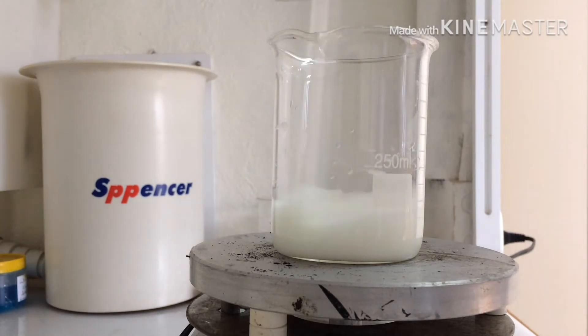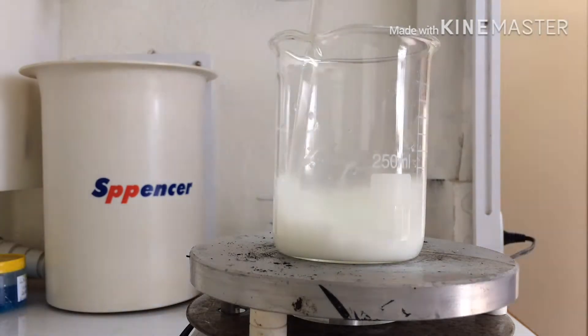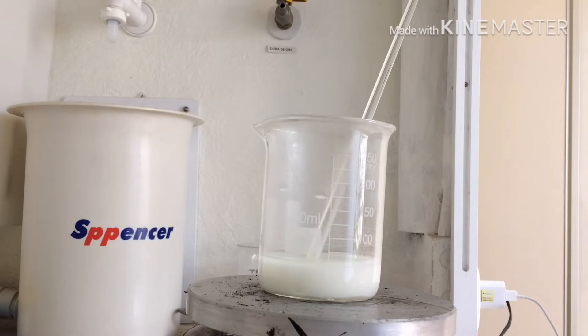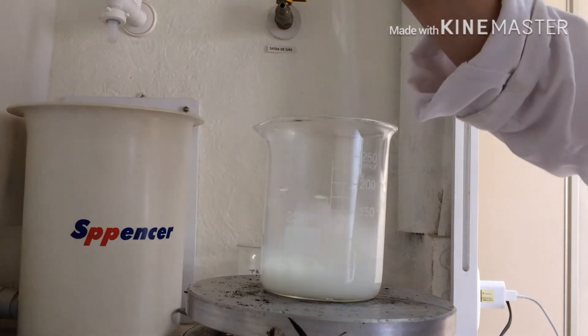And now turn on the heating plate until 70 degrees Celsius. You need to wait until it has a dense consistency. It takes about 30 to 45 minutes until it's all ready.